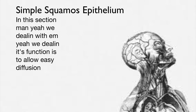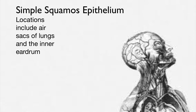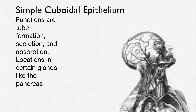Simple squamous epithelium — its function is to allow easy diffusion. Locations include air sacs in the lungs and in the inner eardrum.